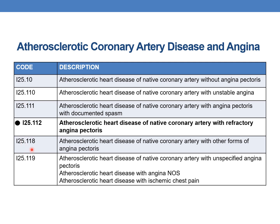I25.119 — atherosclerotic heart disease of native coronary artery with unspecified angina pectoris (sixth digit 9). This is the NOS code for atherosclerotic heart disease with angina, and also applies when the physician documents atherosclerotic heart disease with ischemic chest pain.